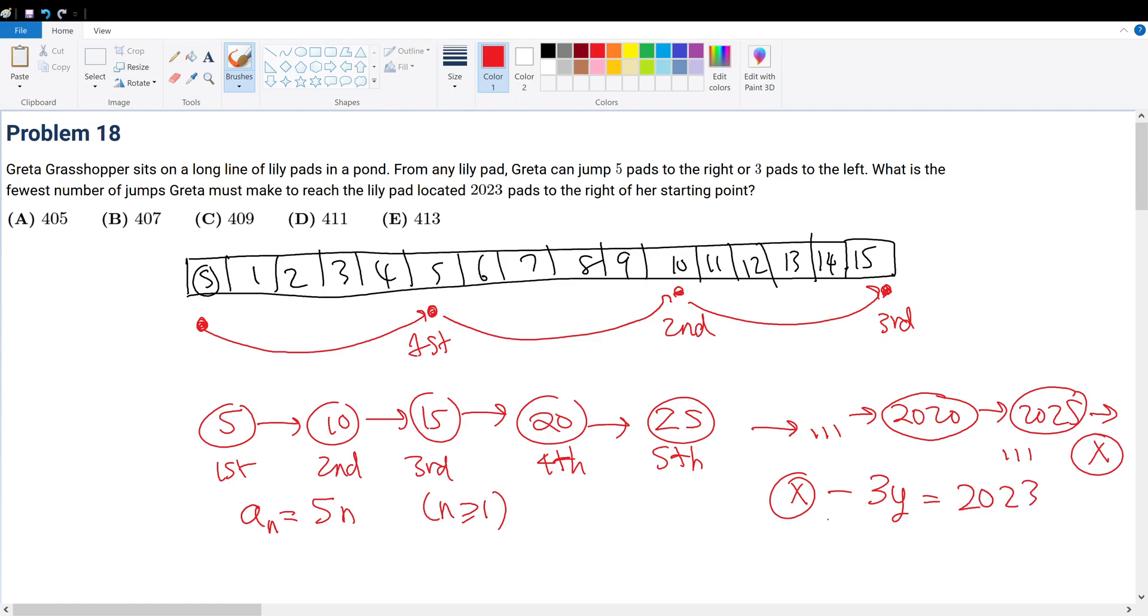Block number x minus 3 times y must give 2023. And the interpretation of this is block x is a multiple of 5—that's the block we ultimately land on after going right all the way. But then we must go back by steps of 3 because it's given in the problem. So we must subtract 3y. Y represents the number of jumps, and that must give us a final result of 2023. So x, this final block, must be equal to 2023 plus 3y.